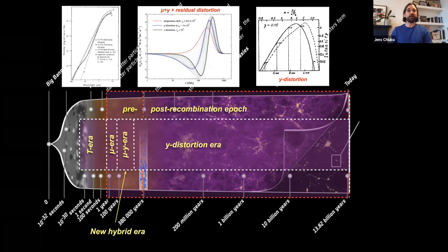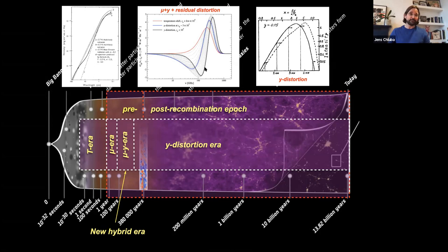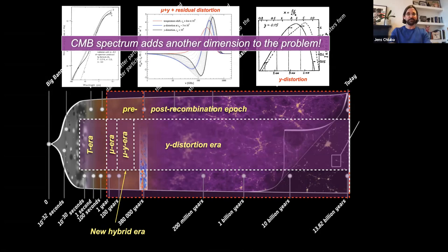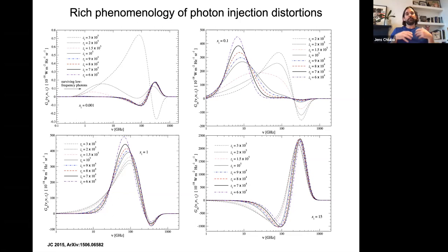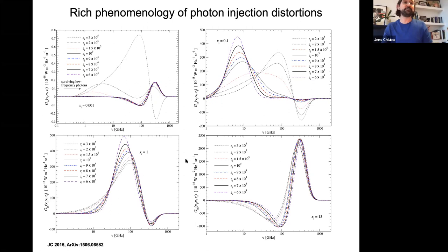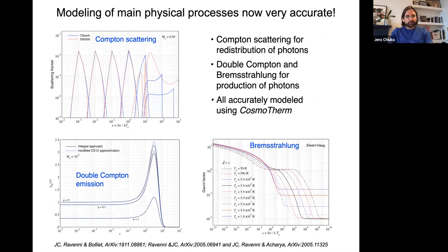For photon injection rather than energy release, you actually get distortions which can be much richer — not the standard mu and y types, but you can actually Comptonize the distribution functions, getting interesting signals that tell you something about the nature of the injection process. We also understand the fundamental processes very well now: Compton scattering, bremsstrahlung for adjusting photon number, and the double Compton process. There's been recent work making these calculations very precise, with efficient computational methods now available.